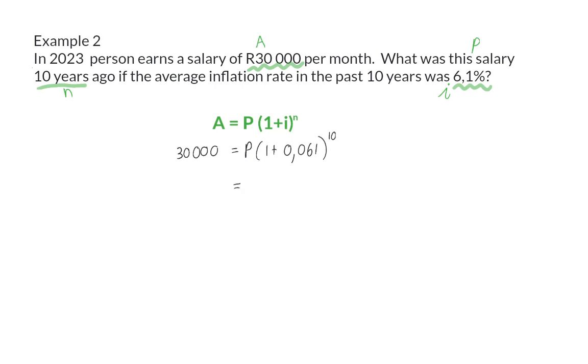To solve P, we need to divide by the whole bracket on the left-hand side. So, 10 years ago, this person's salary was R16,594.62.